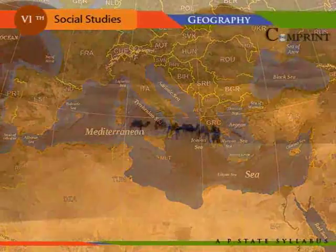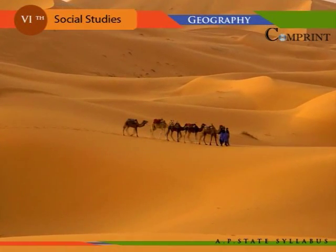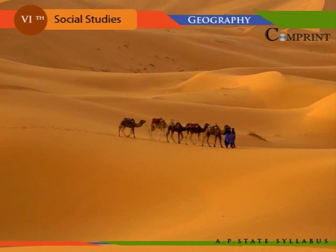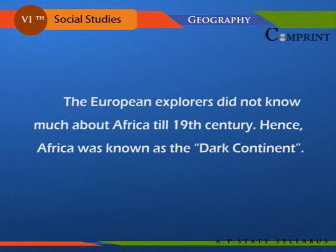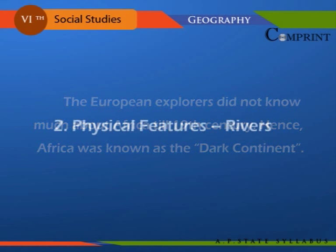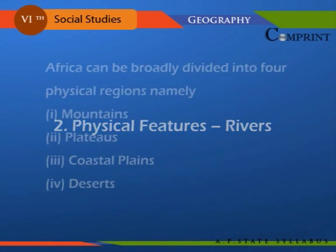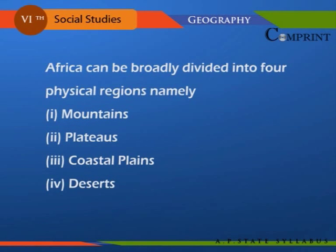The northern part of the continent is wide and is occupied by the Sahara, the biggest desert in the world. European explorers did not know much about Africa until the 19th century; hence Africa was known as the Dark Continent. Africa can be broadly divided into four physical regions: mountains, plateaus, coastal plains, and deserts.